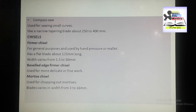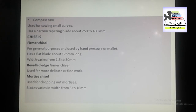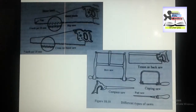Next we have the mortise chisel. Mortise means square or rectangular holes. As its name indicates, the mortise chisel is used for chopping out mortises. These chisels are designed to withstand heavy work, and the blade width varies from 3 to 16 mm.